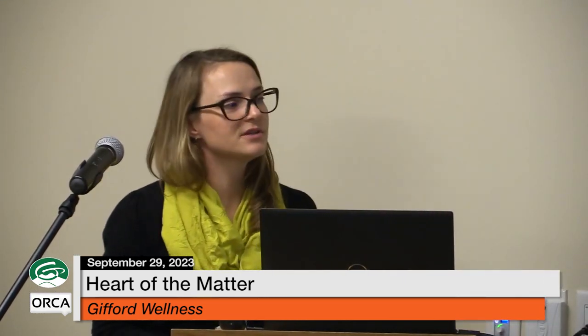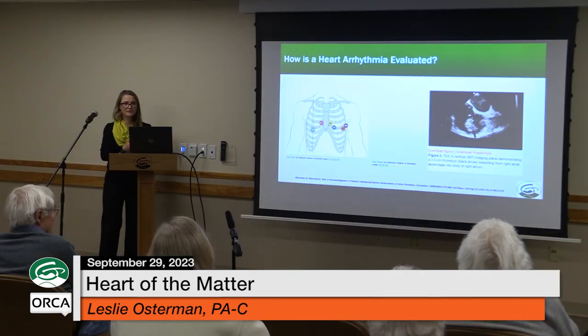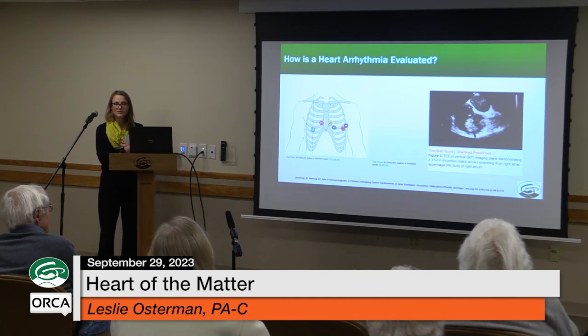To evaluate atrial fibrillation and atrial flutter, an EKG can often catch it if it's happening at the time. A rhythm monitor — almost like a sticker on your chest — can look at your heart rhythm anywhere from 24 hours up to 30 days, giving us a big data set. We also have wearables like smart watches that can help detect abnormal rhythms.